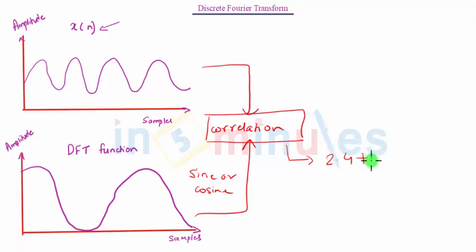For example, 2.4 plus 1.6j. We may see how discrete Fourier transform is performed.